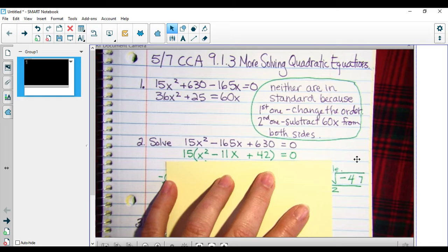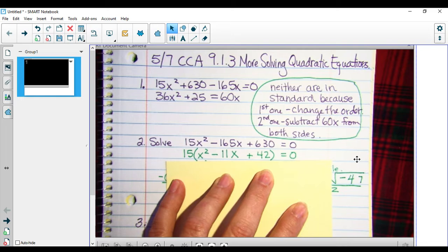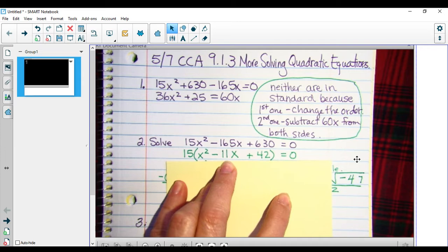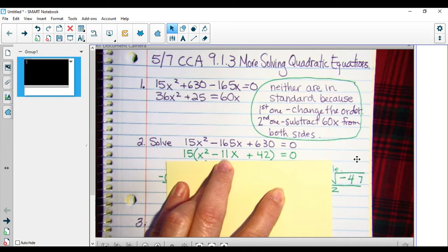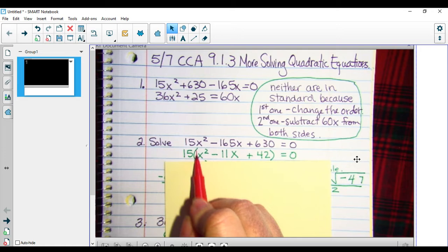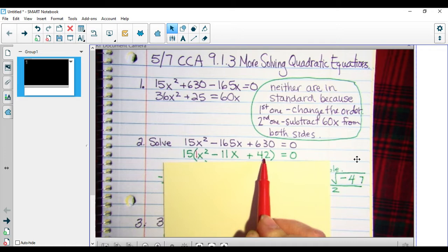I don't believe there's going to be factors of 42 that are going to give me a negative 11x. So I'm going to choose between completing the square and the quadratic formula. I don't want to deal with half of an x for my completing the square, so I'm going to use the quadratic formula. My a value is 1, my b value is negative 11, and my c value is 42.